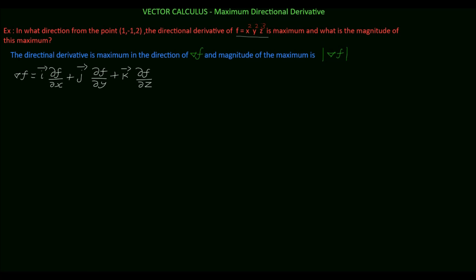Del f is the gradient of the given function. First we have to find del f, which is: i vector into dou by dou x of x squared y squared z cube, plus j vector into dou by dou y of x squared y squared z cube, plus k vector into dou by dou z of x squared y squared z cube.